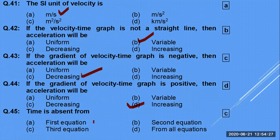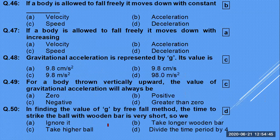When time is absent, the equation used is 2aS = Vf² − Vi². This is the third equation of motion where time is not required.